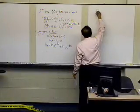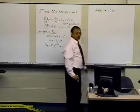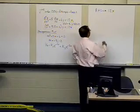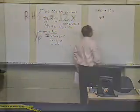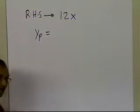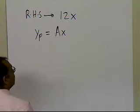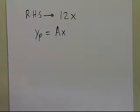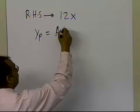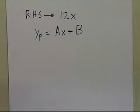We know that the right-hand side, or the forcing function, is 12x. In order to find the particular solution, we have to choose the particular part to be the form of the function given to us and all its possible derivatives. The form of the right-hand side is ax — 12x is an ax form — and the derivative of 12x is just a constant denoted by b, and the derivative of a constant is 0. So the particular part of the solution is ax plus b.